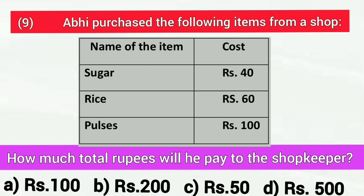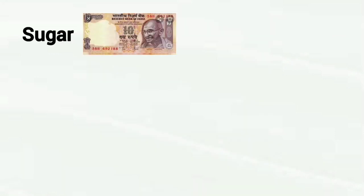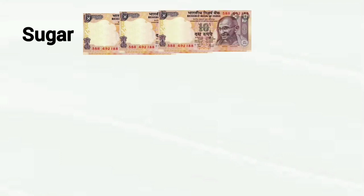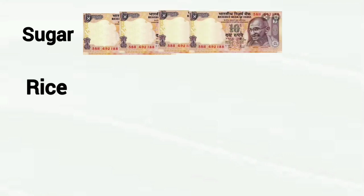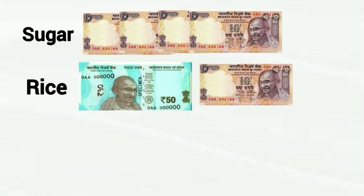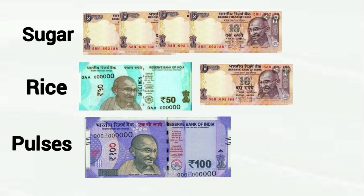Question number 9. Avi purchased the following items from a shop. He bought sugar for Rs. 40, rice for Rs. 60 and pulses for Rs. 100. How much total Rs. will he pay to the shopkeeper? Let's count sugar for Rs. 40, rice for Rs. 60 and pulses for Rs. 100. Sum of all these rupees is Rs. 200.